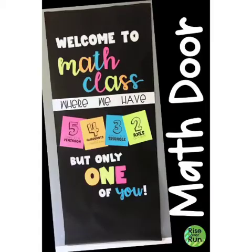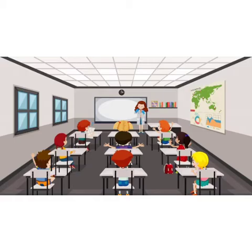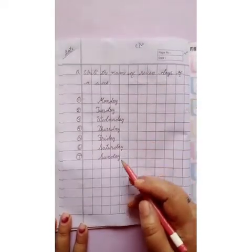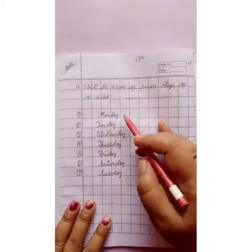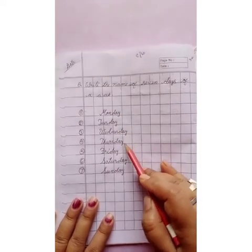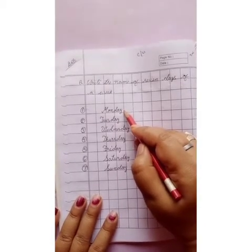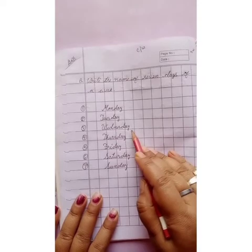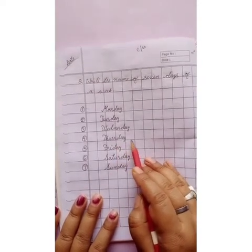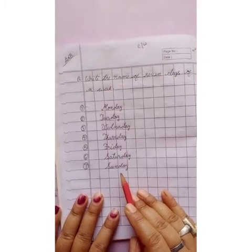Hello kids, welcome to the mathematics class. Today we will continue the topic: the names of the days of a week and their position. Let's revise together — Monday, Tuesday, Wednesday, Thursday, Friday, Saturday, and Sunday. Monday is the first day, Tuesday is the second day, Wednesday is the third day, Thursday is the fourth day, Friday is the fifth day, Saturday is the sixth day, and Sunday is the seventh day of the week.